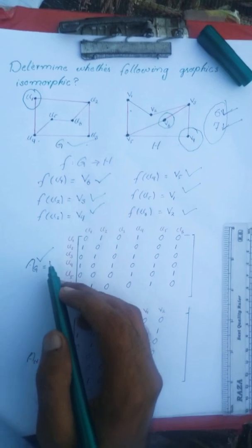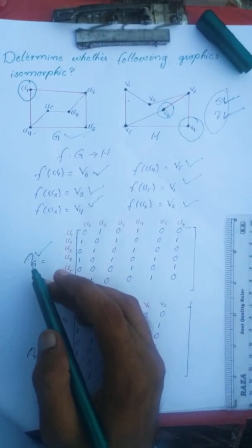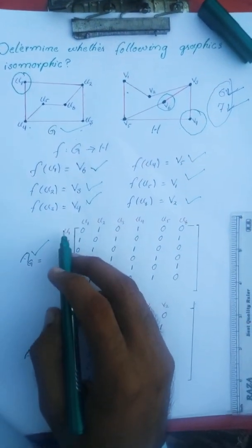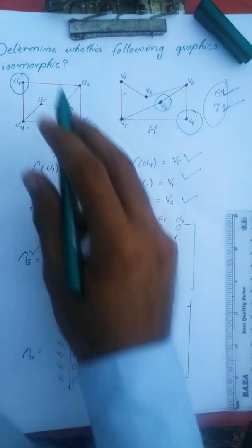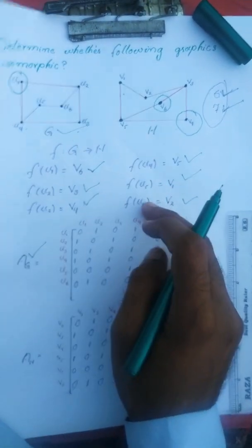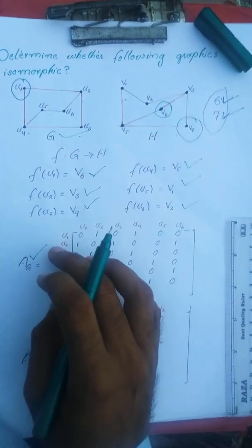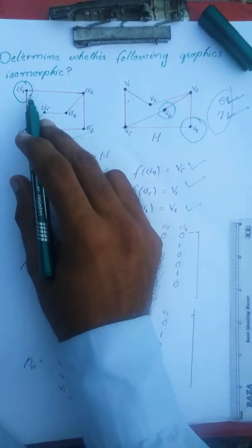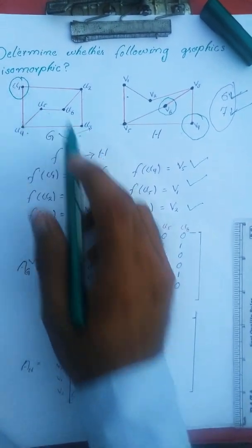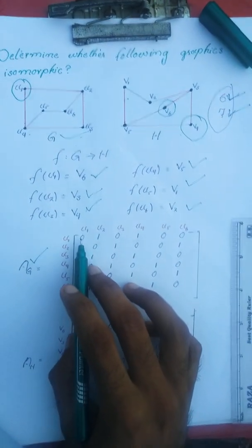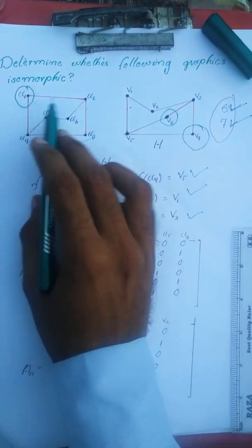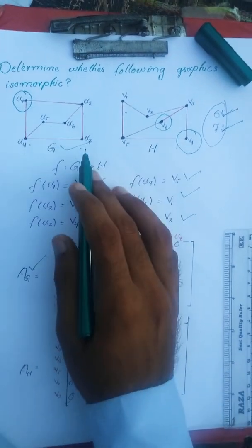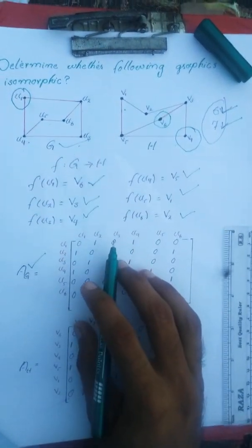We have created an adjacency matrix, let its name is AG of graph G, and we have placed here the vertices of graph G in row and also column. We see that there is no any loop so U1 is not adjacent to itself so it is false. So we have placed here 0. Since U1 is adjacent to U2 so we have placed here 1. Since U1 is not adjacent to U3 so we have placed here 0.